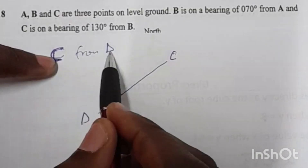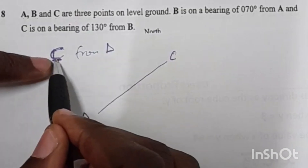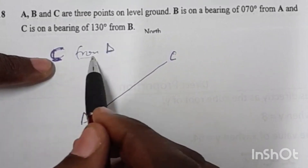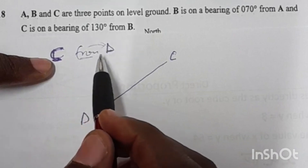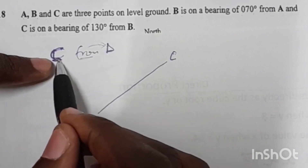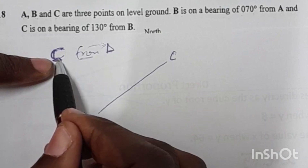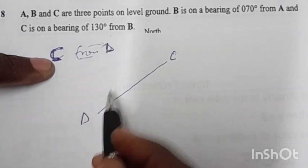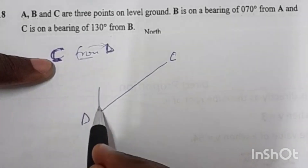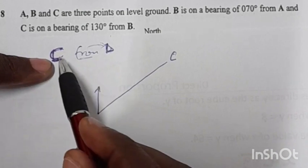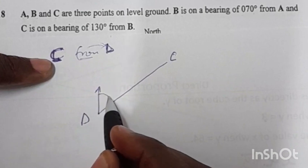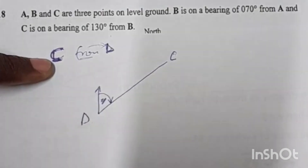Find the bearing of C whilst you are standing at D. The word 'from' indicates the point at which you are going to stand. Where you are standing, you draw a north. So you draw a north at D, and the bearing of C from D is measured from that north. This is the bearing of C from D.